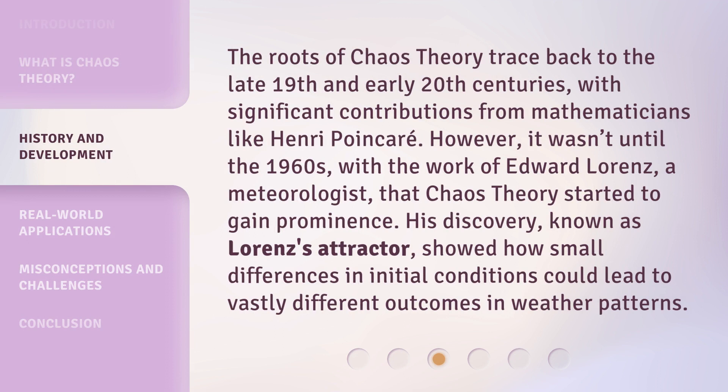The roots of chaos theory trace back to the late 19th and early 20th centuries, with significant contributions from mathematicians like Henri Poincaré. However, it wasn't until the 1960s, with the work of Edward Lorenz, a meteorologist, that chaos theory started to gain prominence. His discovery, known as Lorenz's attractor, showed how small differences in initial conditions could lead to vastly different outcomes in weather patterns.